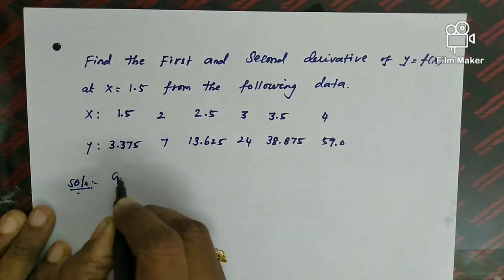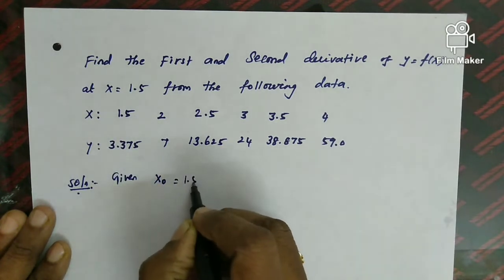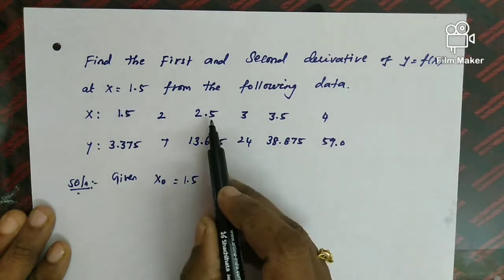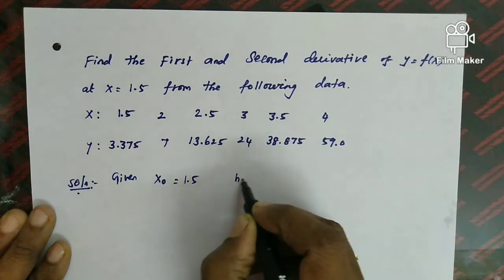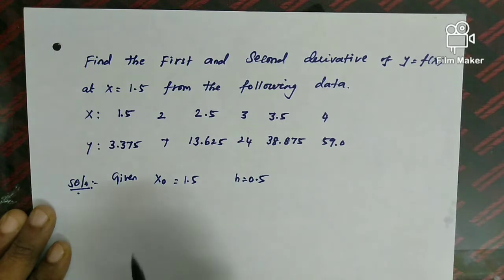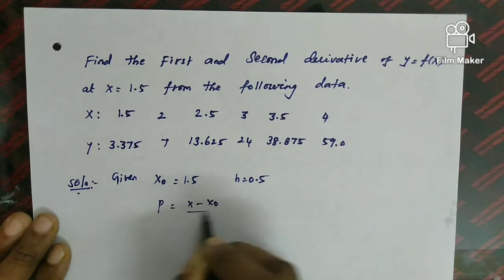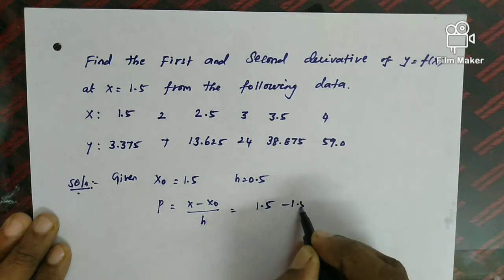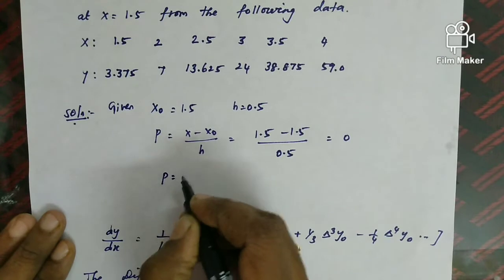From the given data, x₀ = 1.5 and h = 0.5, which is the difference between consecutive x values (e.g., 2 − 1.5, 2.5 − 2, 3 − 2.5 — all equal). So we use the equal difference formula. P = (x − x₀)/h = (1.5 − 1.5)/0.5 = 0. Since P value is 0, we use the P = 0 formula.